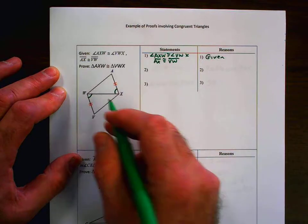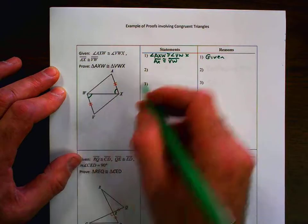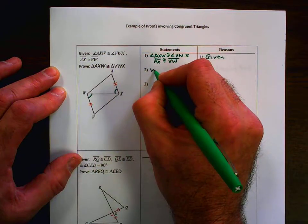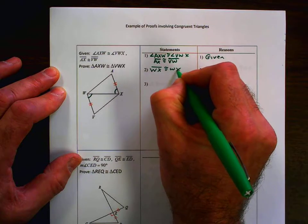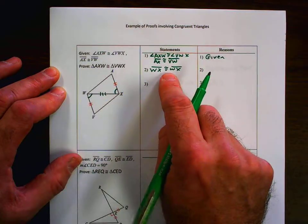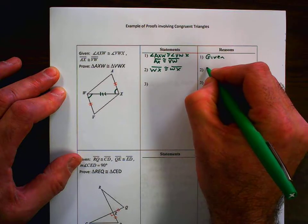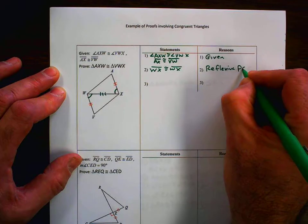From there, we want to look for vertical angles, none there. Shared sides or angles? Hey, we do have a shared side, so we go ahead and mark that. WX is congruent to WX. That's going to be congruent. I mark it here, as well as put here, and tell the reason why. Why? Because it's a reflexive property of congruence.